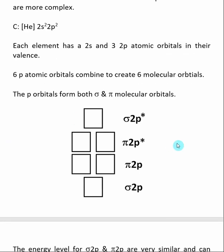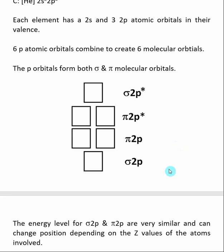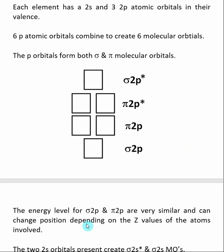When we look at the basic molecular orbital diagram for just the P orbitals, we can see that we form three bonding and three antibonding molecular orbitals. The lowest energy molecular orbital is called sigma 2P, then we have the pi 2P bonding molecular orbitals, which are degenerate and equal in energy. Then come the pi 2P star and sigma 2P star molecular orbitals. It is important to know that the energy levels for sigma 2P and pi 2P are very similar and can change position depending on the Z values of the atoms involved.